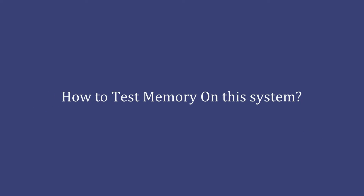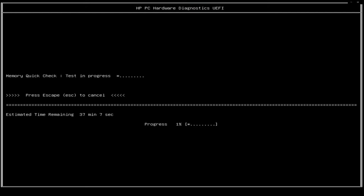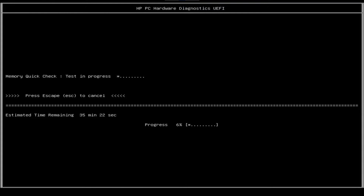How to test the memory module on this system? I forgot to record how to get to the memory testing menu. If you want to test your memory, make sure your PC is off, then turn the PC on. Next, click the Escape key on your keyboard, which is located at the top left-hand corner, then press the F2 key. From there, choose the memory menu and select the quick test option. As you can see here, I'm running a quick memory test just to make sure we do not have a faulty memory module.